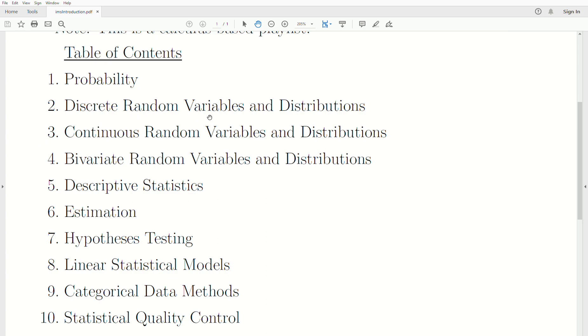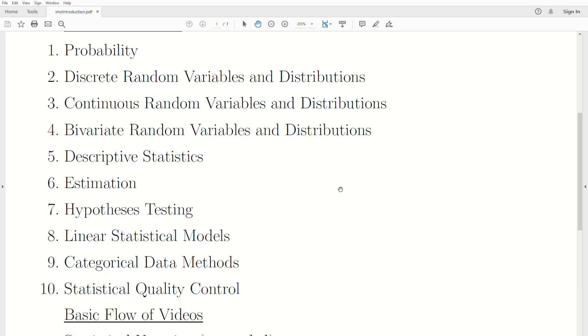Two are discrete random variables and distributions, continuous random variables and distributions, bivariate random variables and distributions, descriptive statistics.